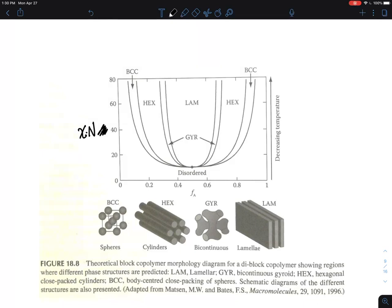If you look at this phase diagram, the x-axis is composition, FA, known as the volume fraction of A. And then this is chi N, which is a measure of degree of segregation.